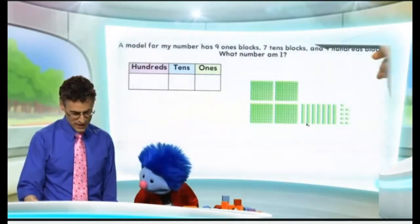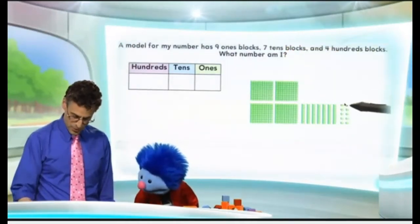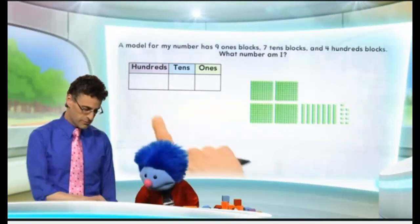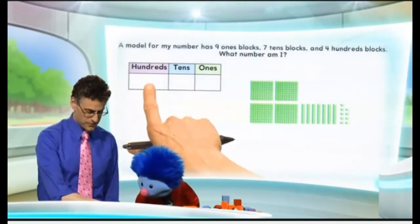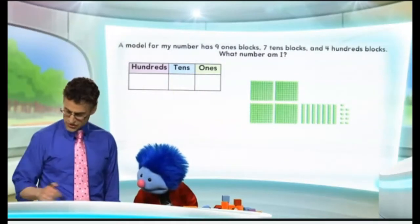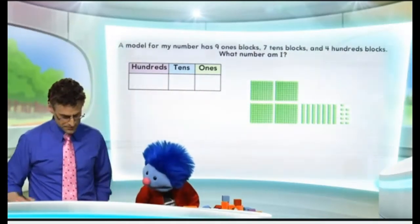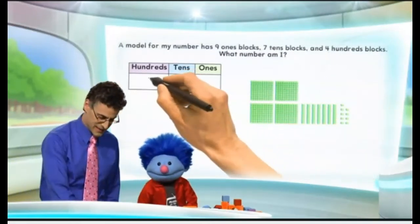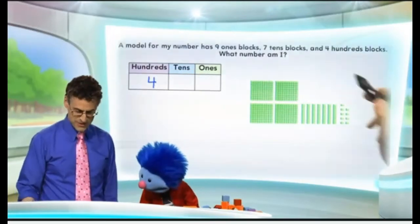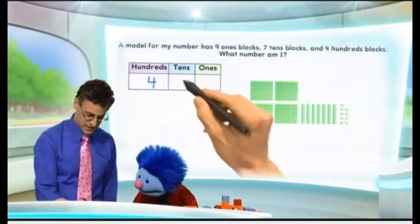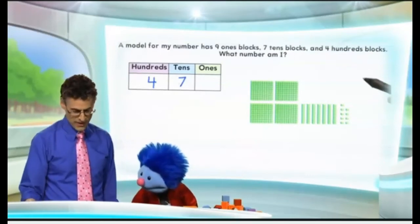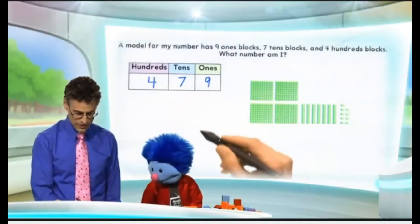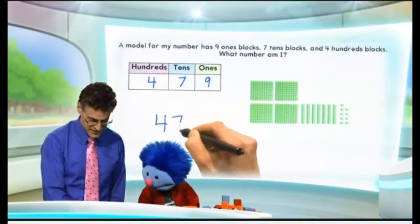And then I have nine ones. So one, two, three, four, five, six, seven, eight, nine. The important thing is that we write them in the right order. We always write the hundreds on the far left, then followed by the tens and the ones. So how many hundreds do we have? Four hundreds. Exactly. And then how many tens? Seven tens. That's right. And then at the end, how many ones? Nine. Exactly. And so all told, we can see that our number is 479.